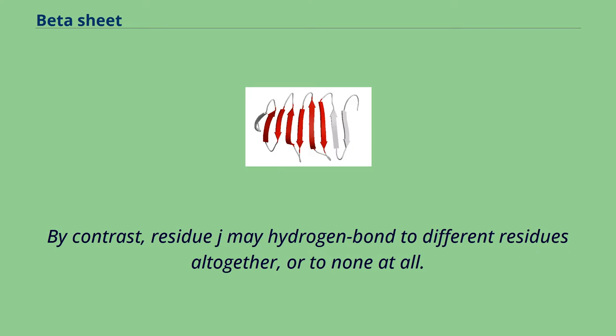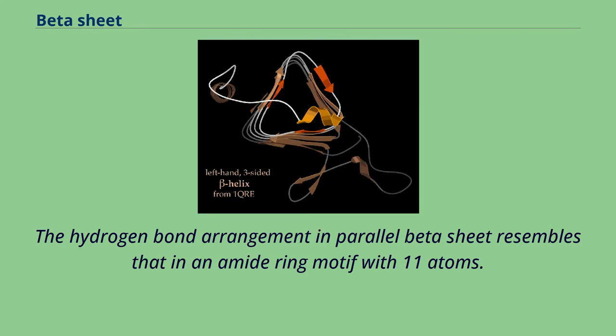By contrast, residue j may hydrogen bond to different residues altogether, or to none at all. The hydrogen bond arrangement in parallel beta sheet resembles that in an amide ring motif with 11 atoms.